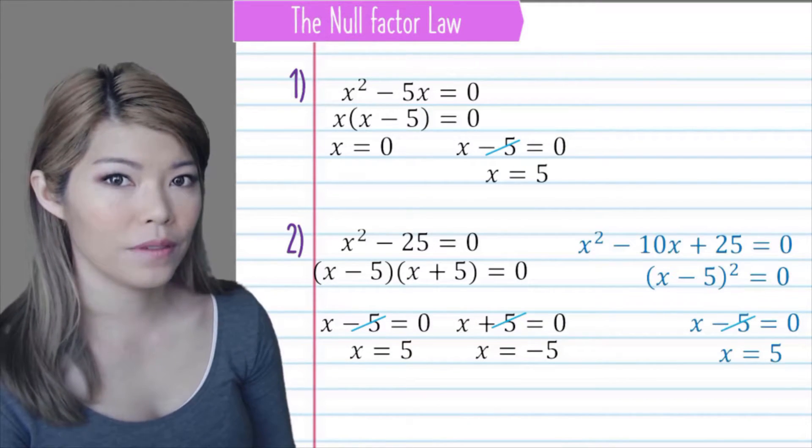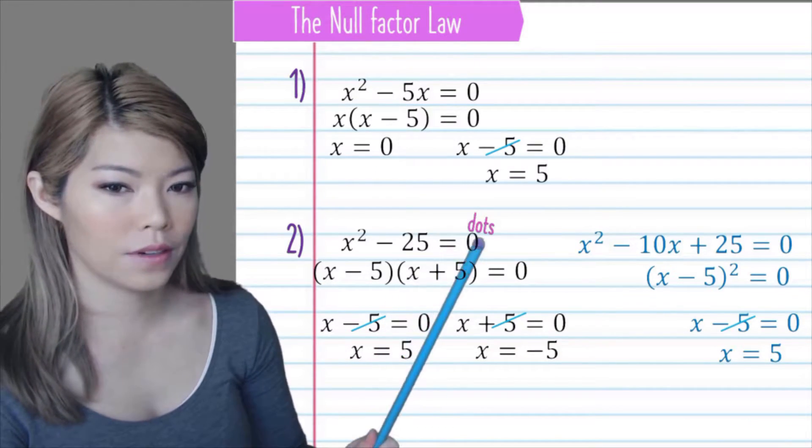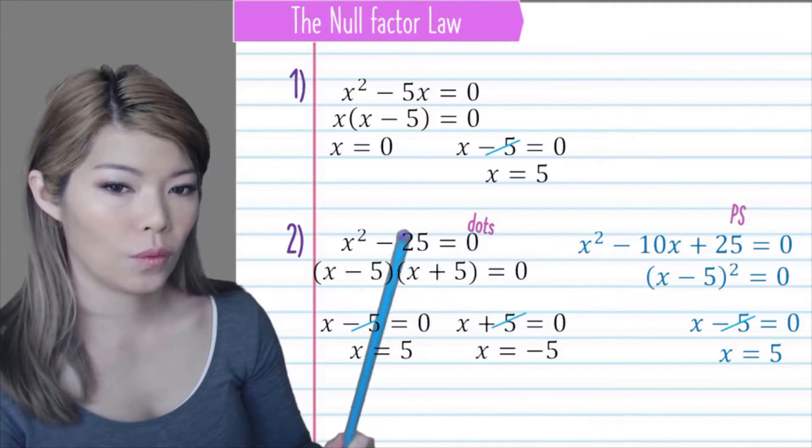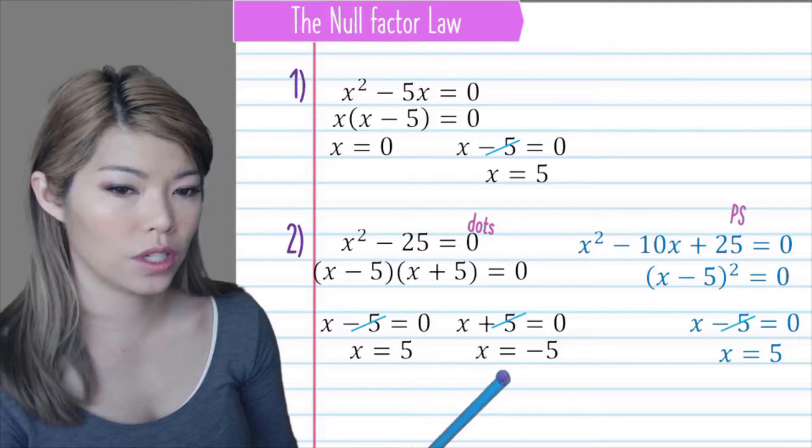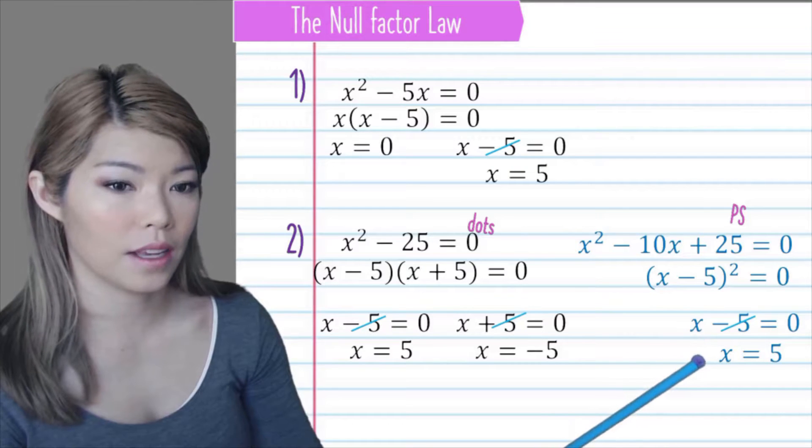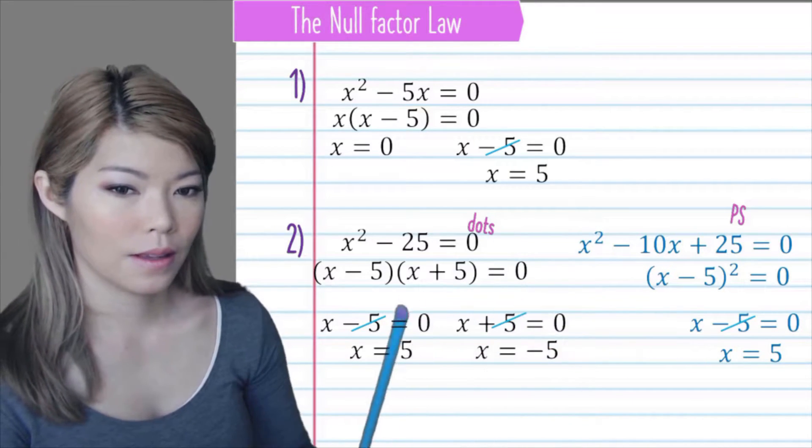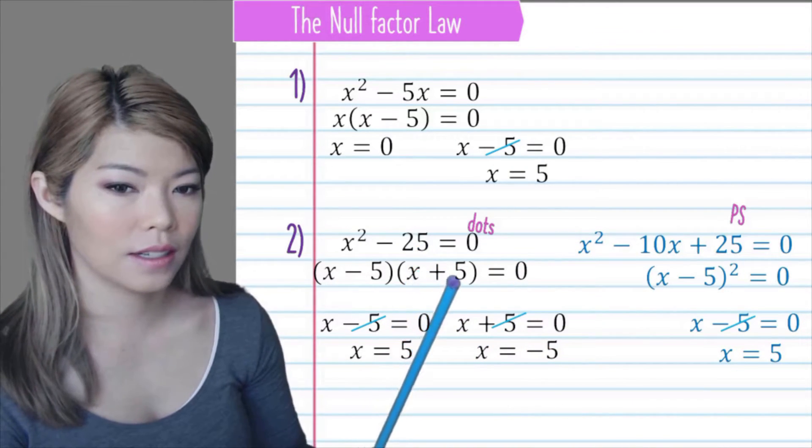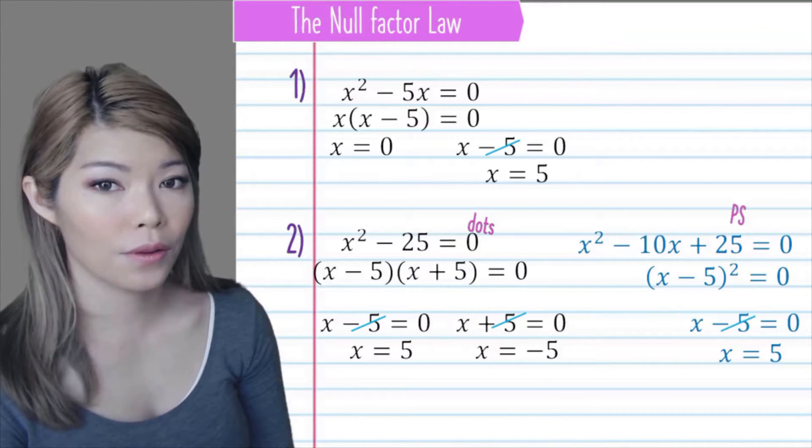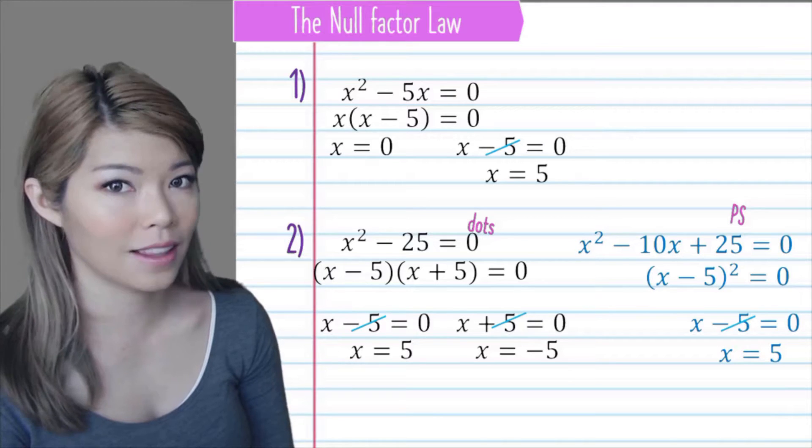In the previous video, we looked at difference of two squares and perfect squares. Do notice that when we have difference of two squares, you'll often get two solutions, whereas perfect squares, you will often get only one solution. If you haven't, or if you've forgotten difference of two squares and perfect squares, please revise. Otherwise, the rest of this video will be very challenging.